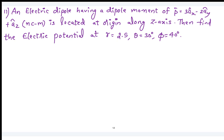There is an electric dipole having a dipole moment of a given vector, located at the origin along the z-axis. Find the electric potential at r equal to 2.5, theta equal to 30, phi equal to 40. The observer point is given in the spherical coordinate system this time.